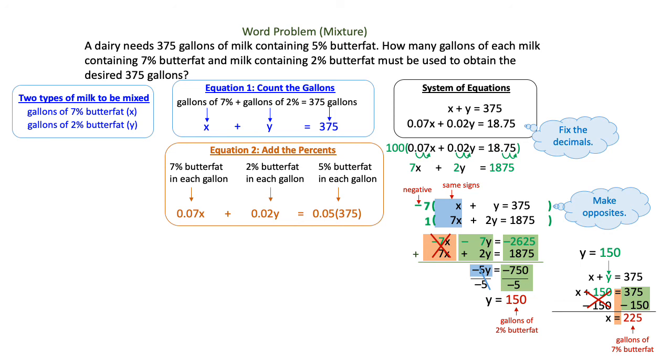If you add those together, you get 375 gallons. And when you apply the percentages, you will see that it all works out. Good luck as you continue to practice these mixture problems.